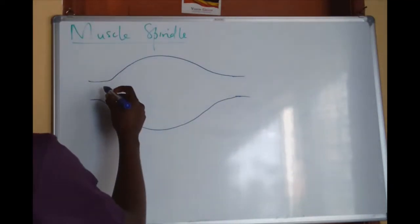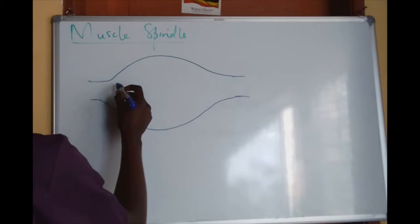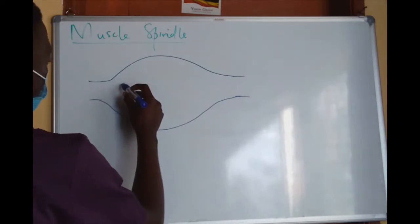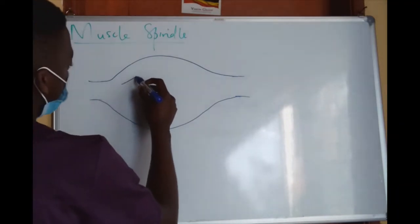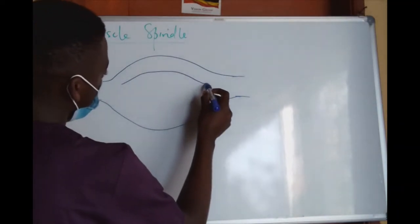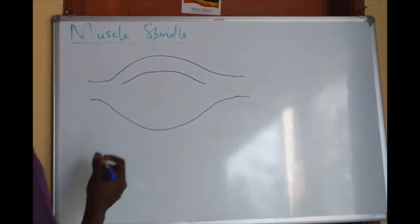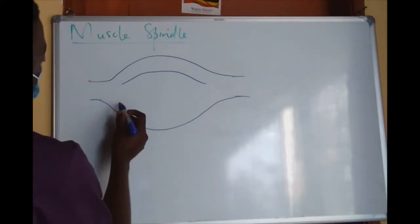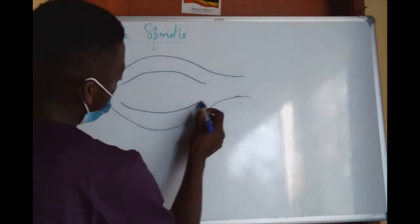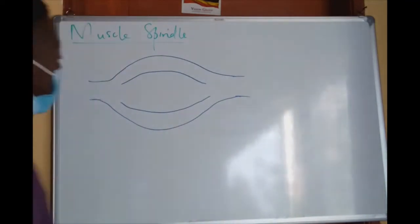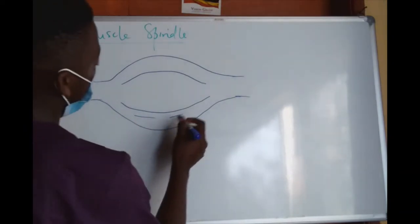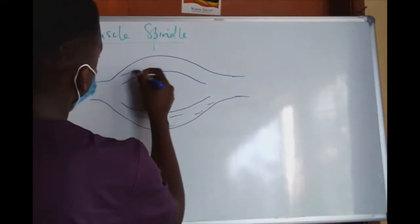These fibres — the outermost ones — are called extrafusal fibres, and these ones here are also extrafusal fibres.